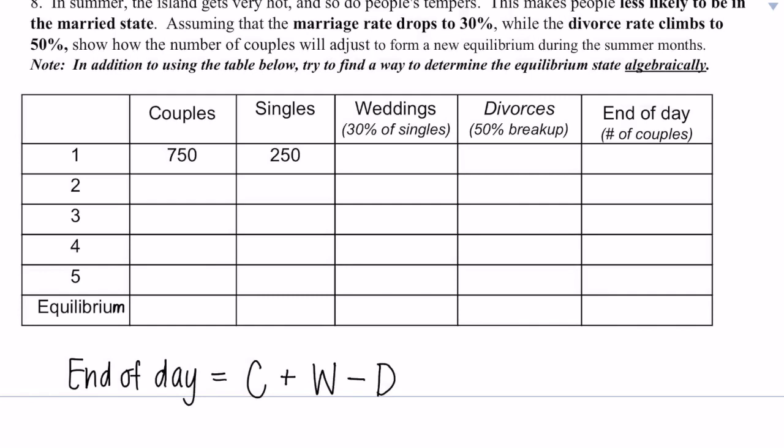This is Equilibrium Island, problem number eight. In the summer, the island gets very hot, and so do the people's tempers. This makes people less likely to be in the married state. Assuming that the marriage rate drops to 30%, while the divorce rate climbs to 50%, show how the number of couples will adjust to form a new equilibrium during the summer months. So in the previous one,